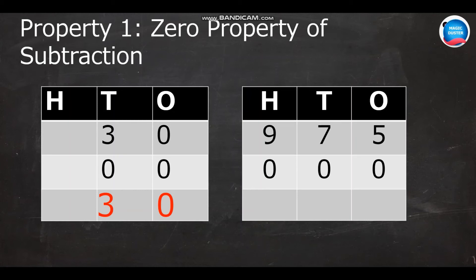As I said before, in the zero property, if we subtract zero from any number, the answer is the same number. Now, guess the answer: nine hundred and seventy-five minus zero. Yes, the answer is the same number, nine hundred and seventy-five.